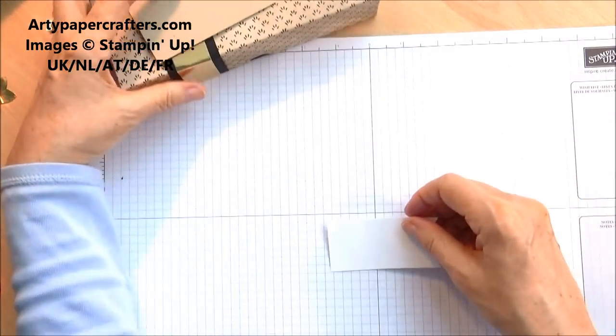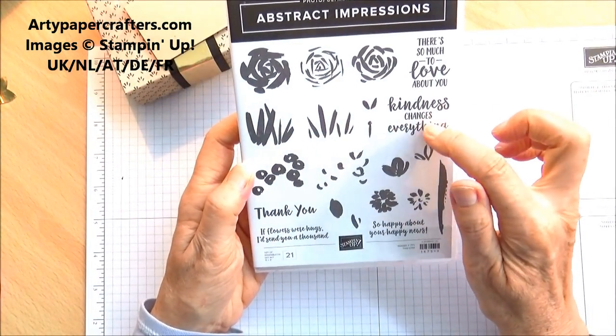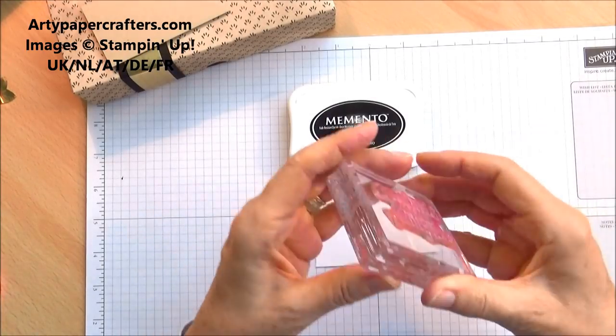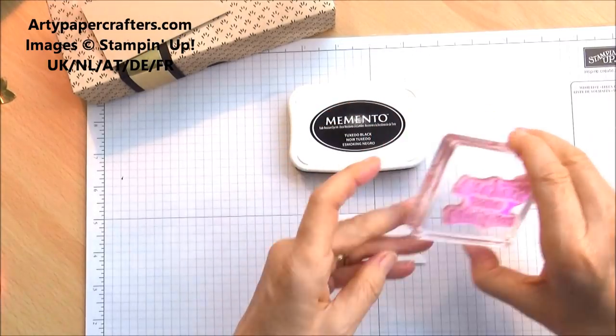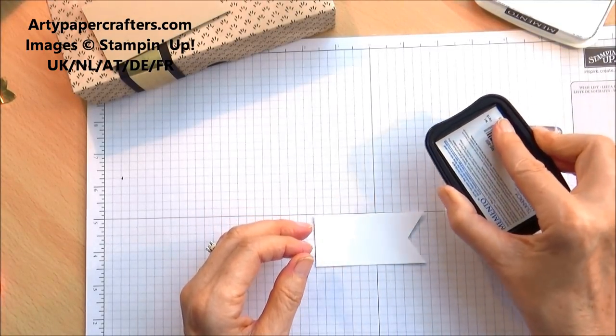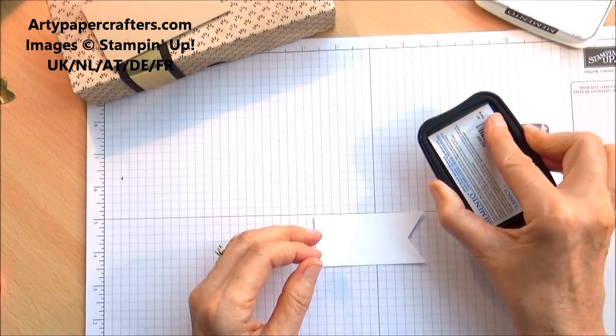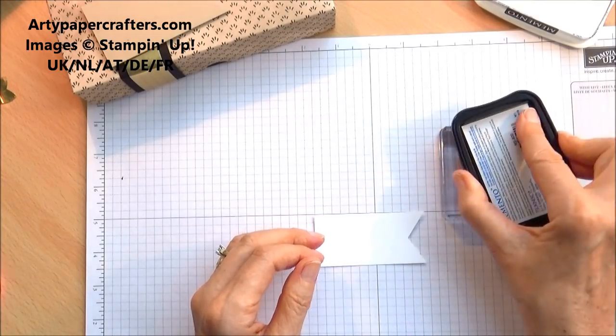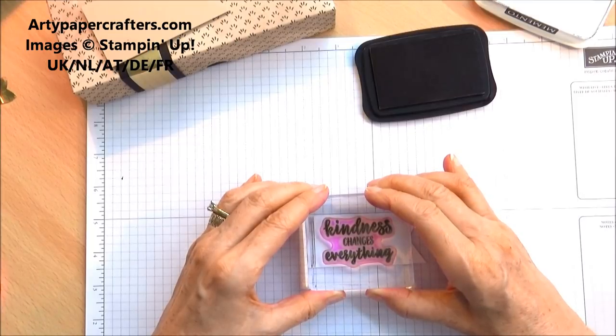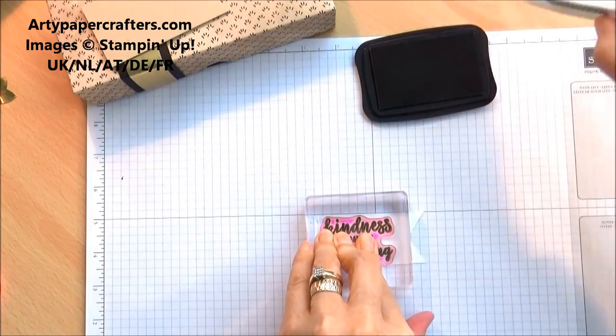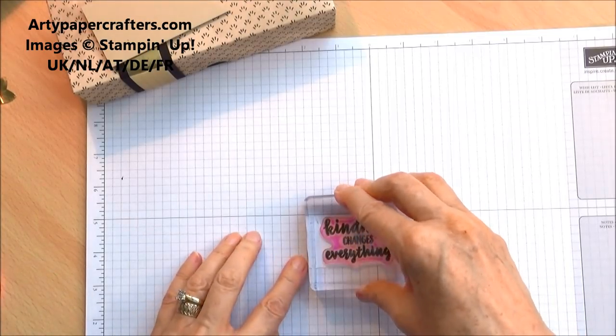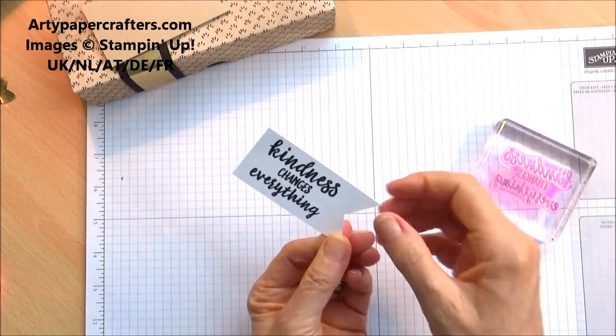Let's stamp our sentiment. I've taken the same sentiment kindness changes everything because I like it. I'm going to use black memento and I've prepped it on a block, this is a D block. Into our stamp, ink and stamp down. Hold that on so that the black comes and absorbs into the paper a bit. Let's hope that's had enough, pull that off. Yeah and that's good, I like that.